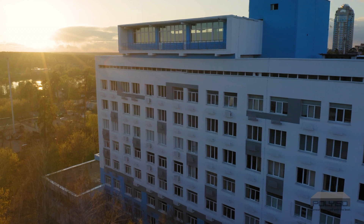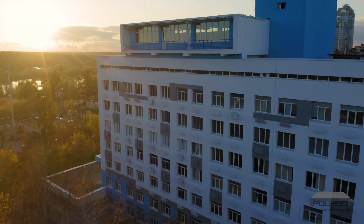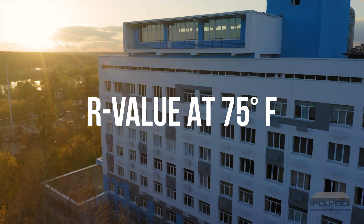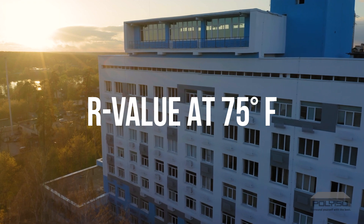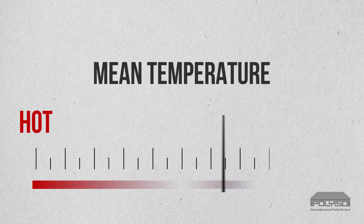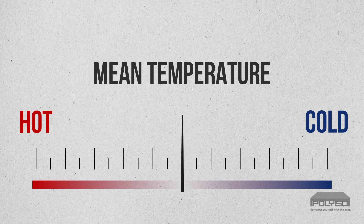While mean temperature can fall within a wide range of selected values, the material standards for specific insulation products specify the mean temperature for testing and reporting. For most insulation products, it is mandatory to measure and report R-value at 75 degrees Fahrenheit mean temperature. Mean temperature in this context refers specifically to the middle value between the hot and cold surfaces of the insulation sample in the heat flow meter.